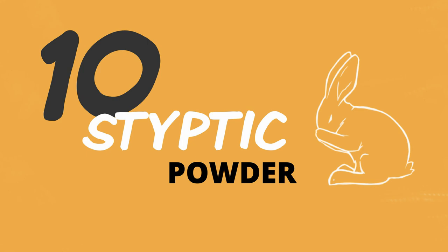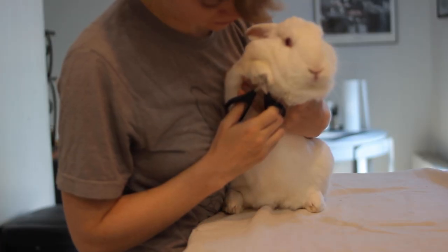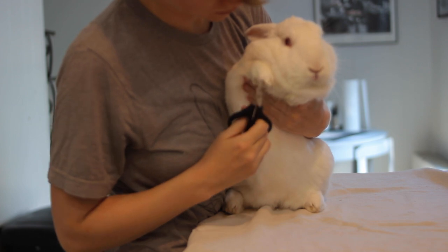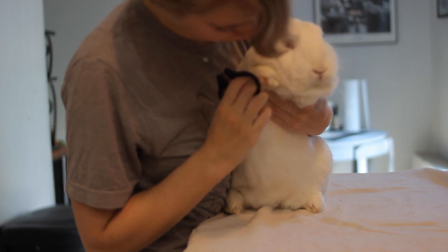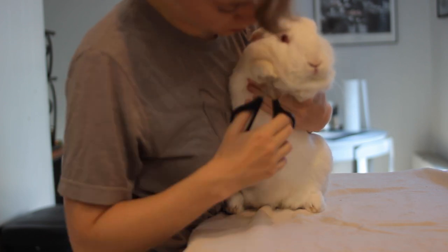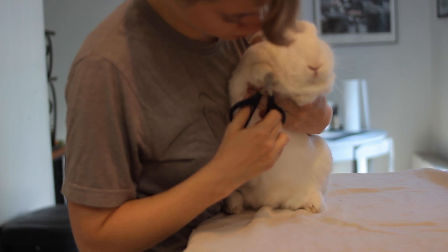Along the same lines, you want to make sure you have something like styptic powder available because sometimes when you're clipping rabbit's nails, you end up clipping into the quick. It's unfortunate when it happens, but especially if rabbit's nails are dark and you can't see the quick, sometimes it does happen. It can help to make it sting a little less and it can help prevent the bleeding because rabbit nails can bleed surprisingly much. It's not a big deal if you do that. Most of the time rabbits will just clean themselves off and they'll be fine, but if that does happen, you want to have a little bit of that styptic powder available.